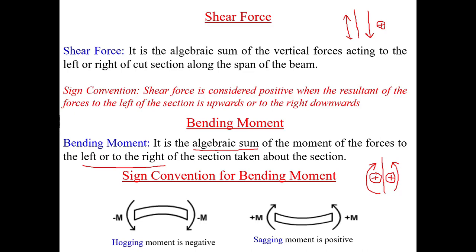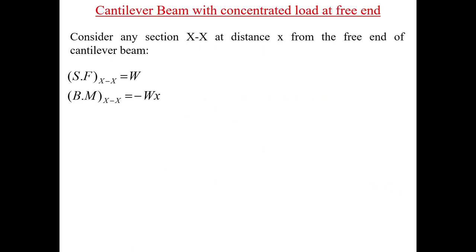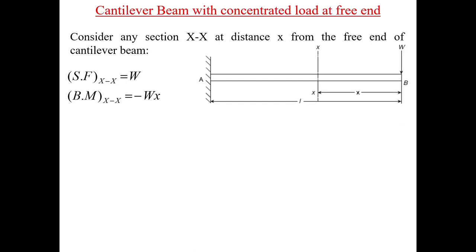Let us take the first case of a cantilever beam subjected to a point load at the free end. Point A is the fixed end and point B is the free end. Since the loading and geometry do not change between A and B, we can take a single section throughout the beam. We take a section X-X at a distance x from the free end, using B as the reference point.